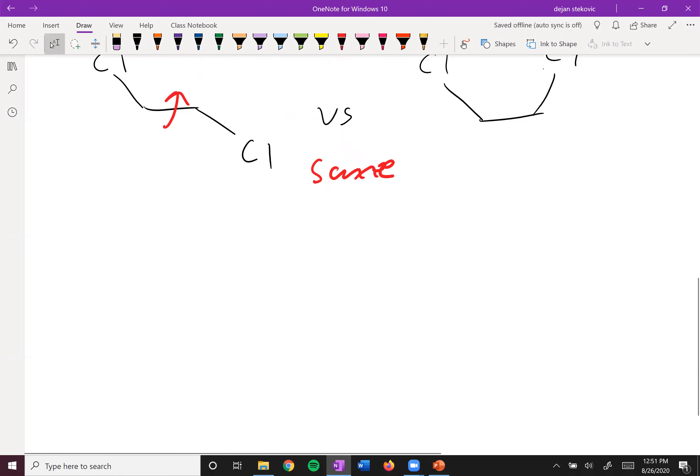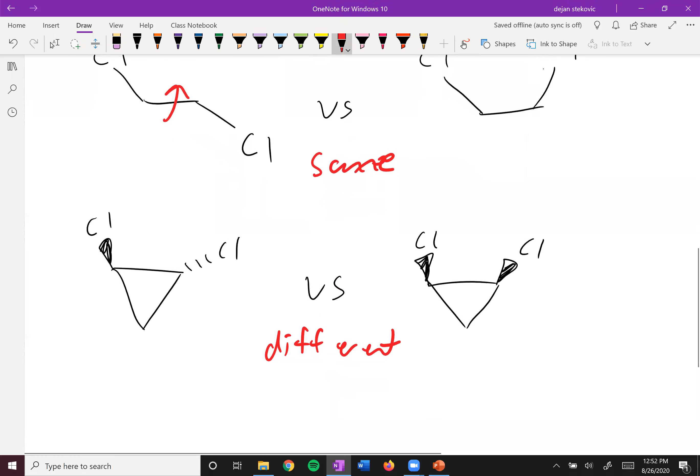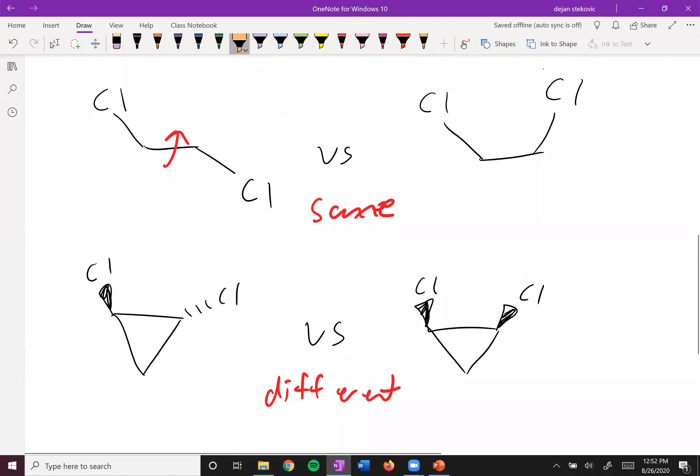However, if we try to have that same principle with something like cyclopropane, we cannot have rotation about this bond. So if we think about these two molecules, they're actually different because we can't rotate about this bond. You see in one molecule, one is a wedge, one is a dash. This is called trans when they're on opposite sides.